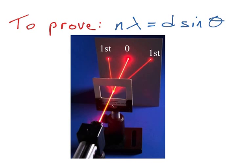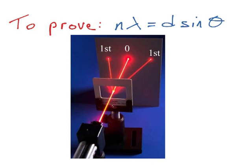The picture you can see is a simple setup of what we would get if we passed red laser light through a diffraction grating and the pattern that would emerge on a sheet of paper. The beam of light that travels straight through the diffraction grating is called the zero order image. The two dots to the left and right are both the first order images.